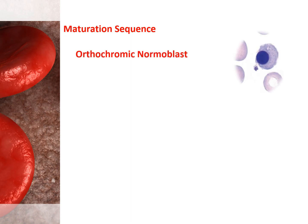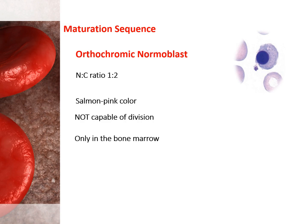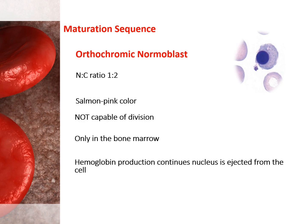In the orthochromic normoblast, the nucleus is completely condensed and the nucleus-to-cytoplasm ratio is approximately 1-to-2. The increase in the salmon pink color of the cytoplasm reflects nearly complete hemoglobin production. The orthochromic normoblast is not capable of division due to the condensation of the chromatin. It is present only in the bone marrow. Hemoglobin production continues on the remaining ribosomes using messenger RNA produced earlier. Late in this stage, the nucleus is ejected from the cell. This stage lasts approximately 48 hours.